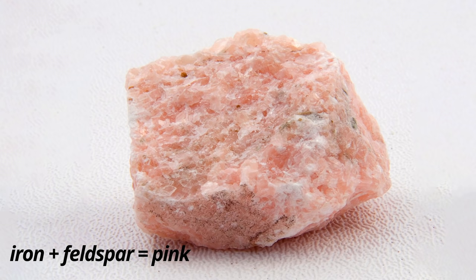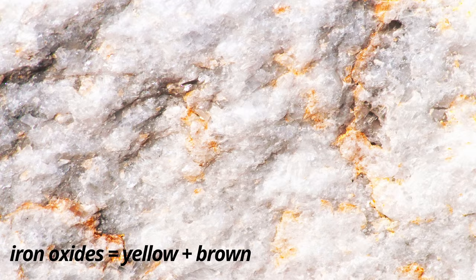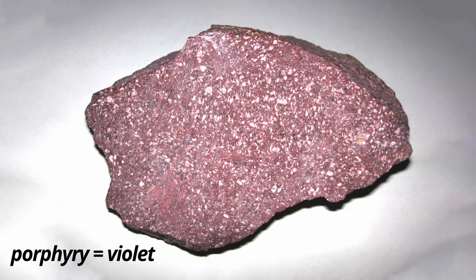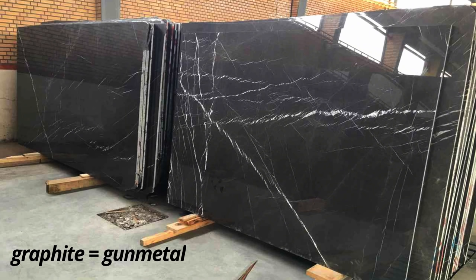For example, iron and feldspar will turn marble pink. Iron oxides will cause yellow and brown deposits. Serpentine will create a green hue. Porphyry will create a violet coloring. And graphite will turn marble dark and gleaming like gunmetal.